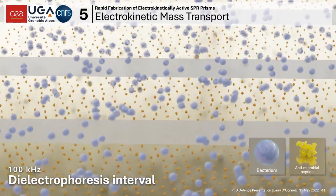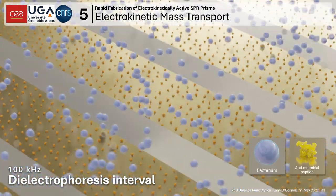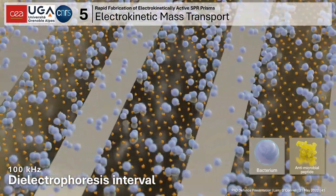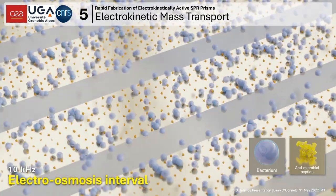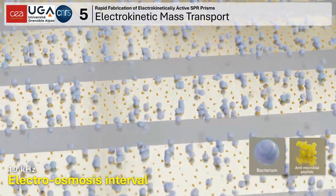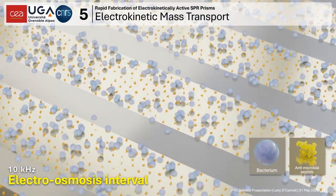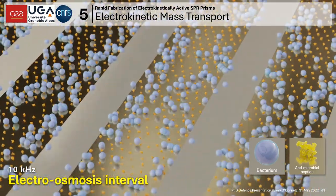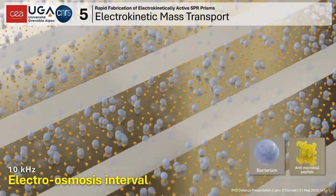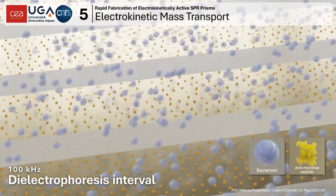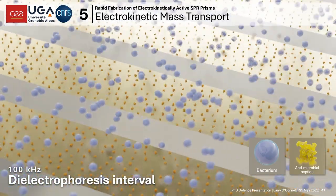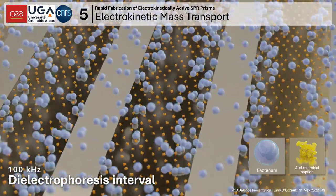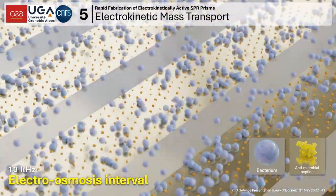The strategy is to use first dielectrophoresis at about 100 kHz to attract bacteria from the solution and bring them onto the surface. Once they're there, we change the signal frequency to about 10 kHz where electroosmosis dominates, dragging bacteria across the surface to the interaction zone where they can interact with the immobilized ligands — in this case antimicrobial peptides.